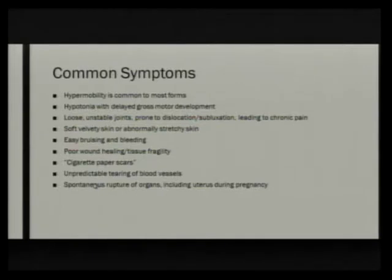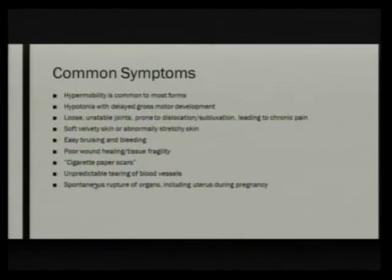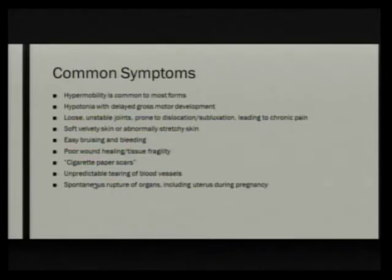Common symptoms to all subtypes: hypermobility is one of the most striking things. They have hypotonia, most have delayed gross motor development, and with the exception of a couple, cognitive function is not affected. They have loose, unstable joints prone to dislocation, subluxation, and chronic pain. The skin can be soft and velvety or the super stretchy type. Easy bruising, poor wound healing, and fragility are typical. Unpredictable tearing of blood vessels and spontaneous rupture of organs, including the uterus during pregnancy, are important complications.